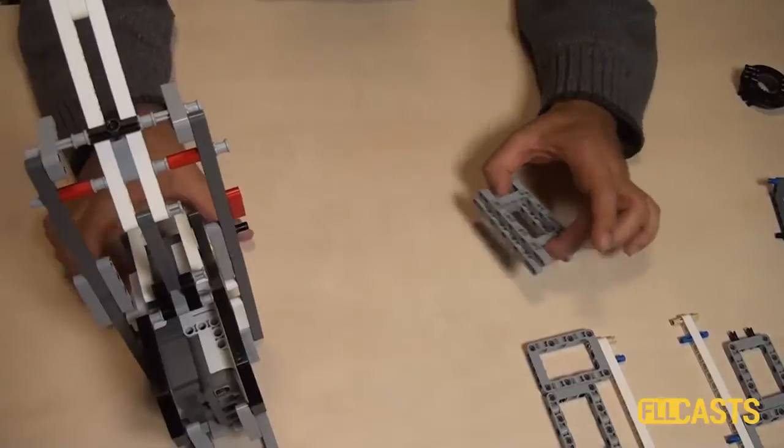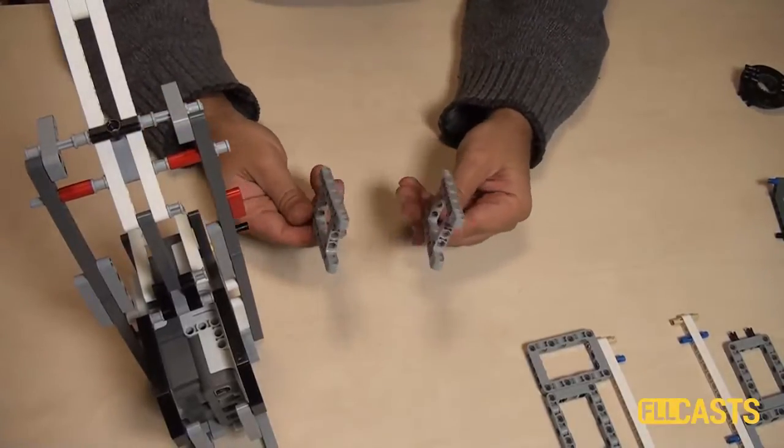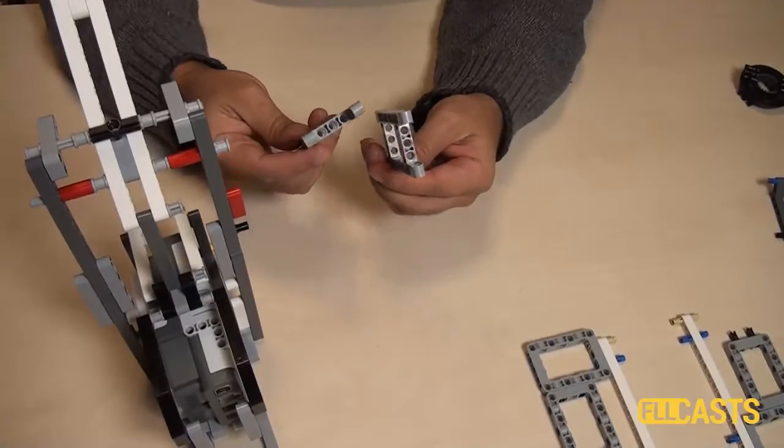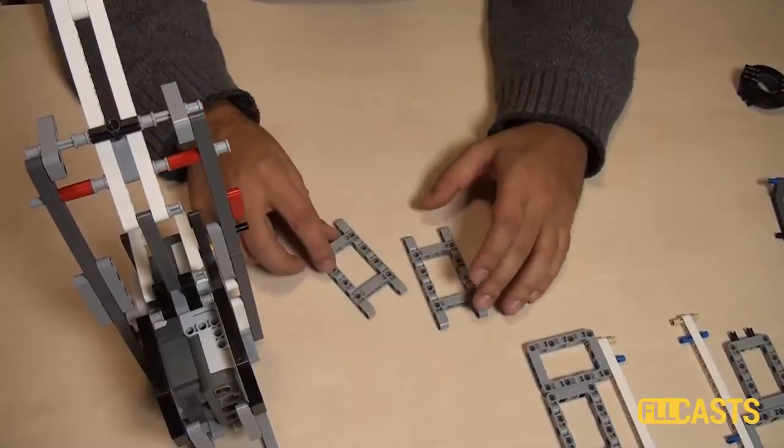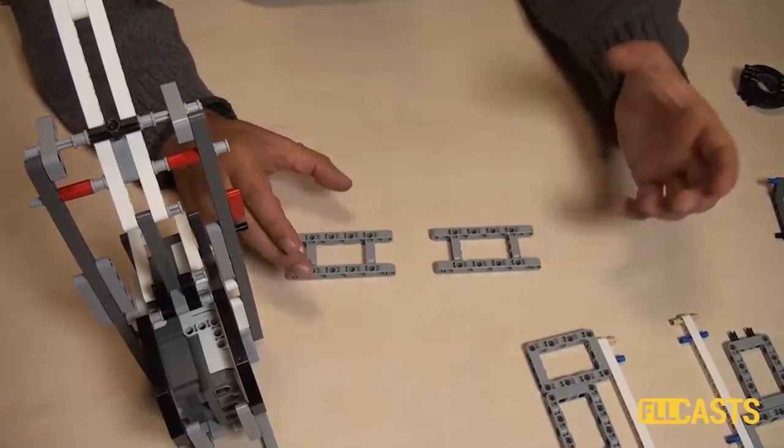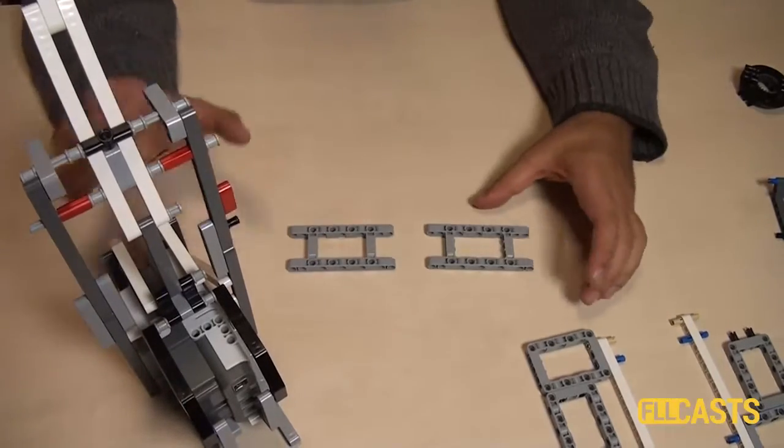A good way to enhance the base of the robot is to use frames. These frames are available in the EV3 version of the robot and in some of the newer NXT versions. So we can find different ways to attach those frames and to enhance the base, to increase the surface of the base.